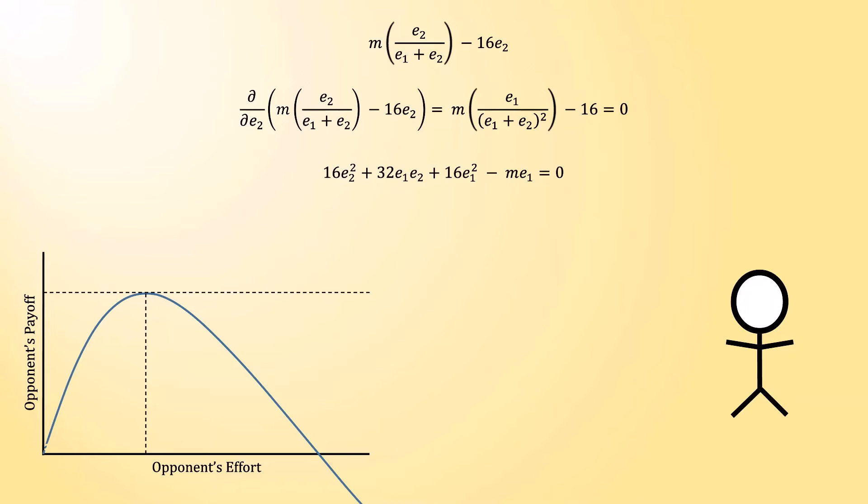If we do a little bit of math, we can rearrange the derivative to look like this. This is where things go a little off the rails, and why this problem is difficult to solve. We want to know what value of e2 makes this equation true. But you'll notice that this is a quadratic equation, and thus you need the quadratic formula to solve it.